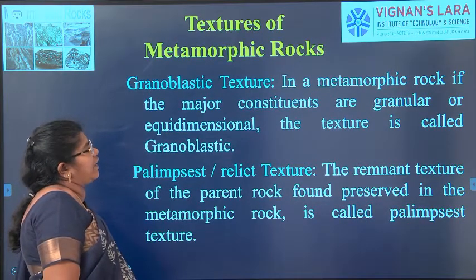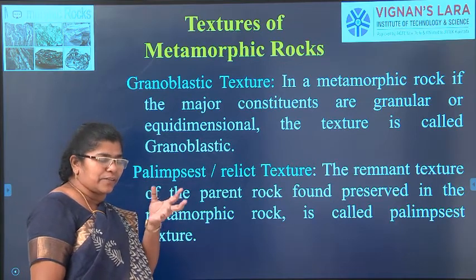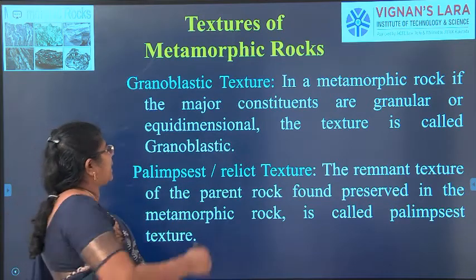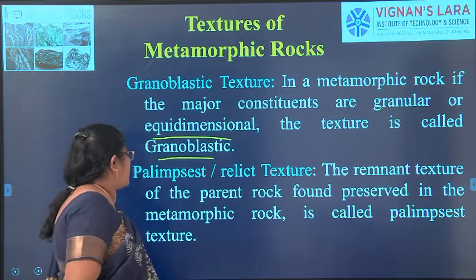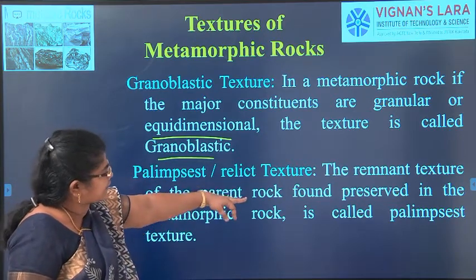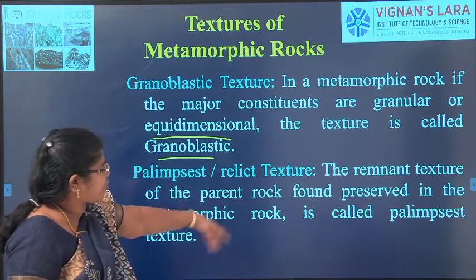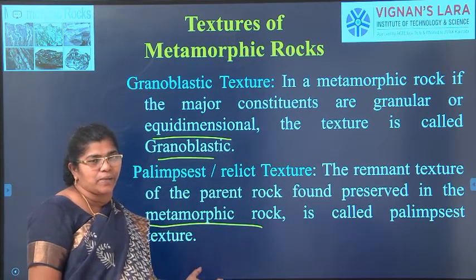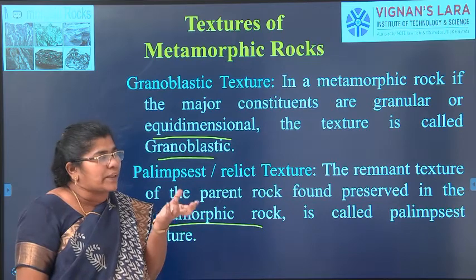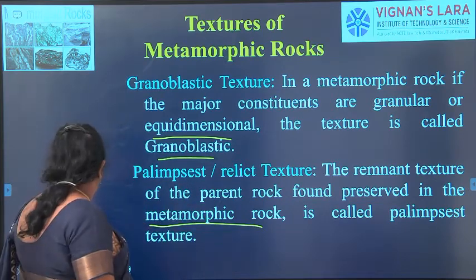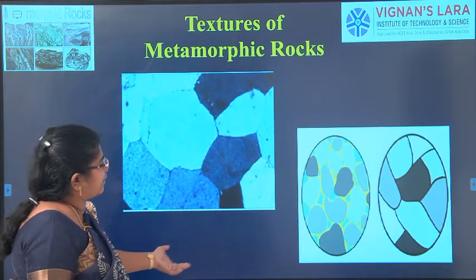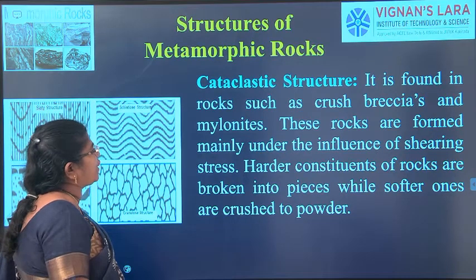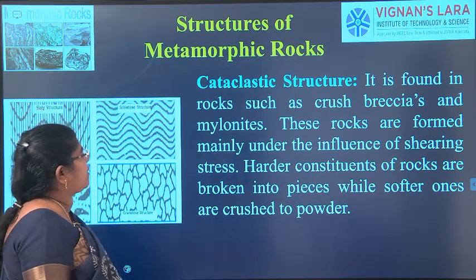Granoblastic texture — here the crystals form as granules that are equidimensional, called granoblastic. Palimpsest is a relict texture where the remnant texture of the parent rock is found preserved in the metamorphic rock — changes are very minimum as the properties of the parent rock are reflected. Then cataclastic structure, found in rocks such as crush breccias and mylonites, formed mainly under the influence of shearing stress.